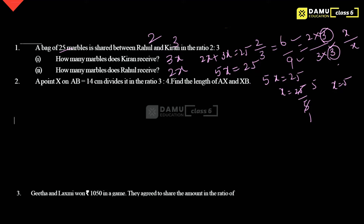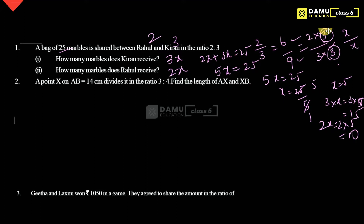Kiran will get 3x, that is 3 into 5, which is 15 marbles. Rahul will get 2x, that is 2 into 5, which is 10 marbles. So Kiran will get 15 and Rahul will get 10. That is the answer.